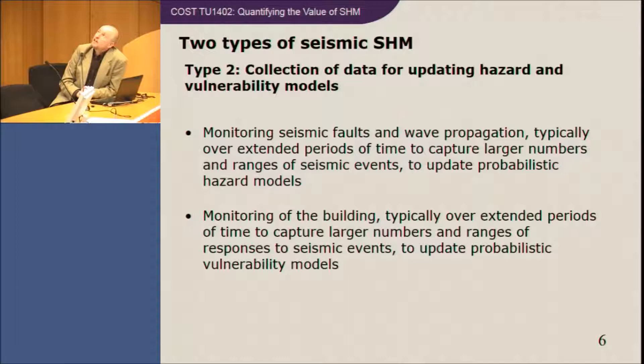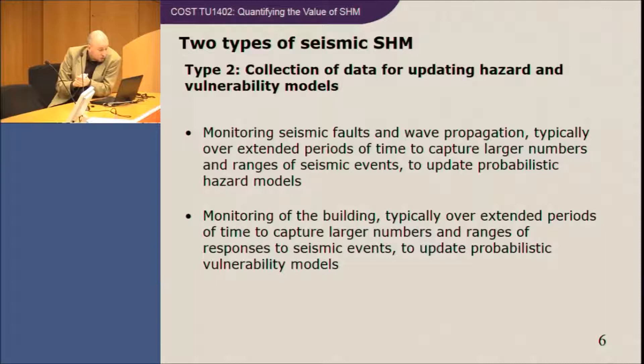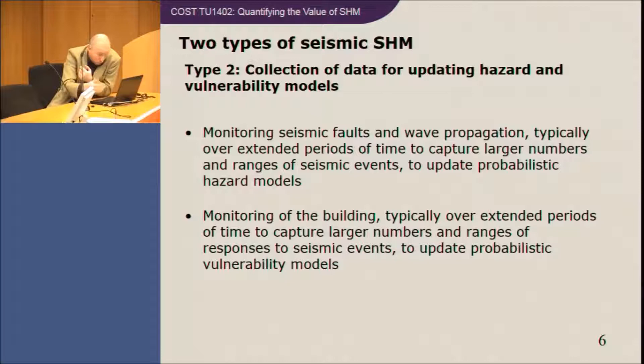The second type of monitoring is not related to damage detection as such. It is based on collection of data for updating hazard and vulnerability models. This typically involves modeling of faults and wider areas, measuring fault activity and wave propagation over an extended period of time to capture larger numbers of seismic events, so you can update probabilistic hazard models. There is also a place for sensors on the building to calibrate computer models or vulnerability models. The downside is that these will likely be many low to moderate intensity events, creating a problem when extending this data to a strong event.